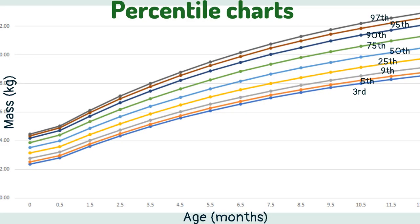Percentile charts are used to track growth. Percentile charts measure a baby's growth against the growth of other babies the same age. These charts were created by measuring a large number of babies. The measurements were divided into 100 groups, which are used to find out what percentage of readings are below a certain value or percentile.